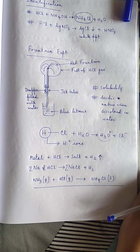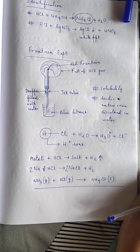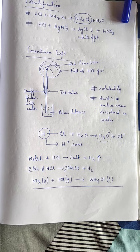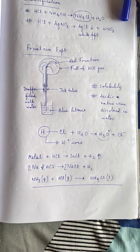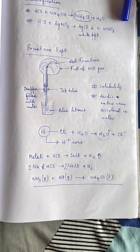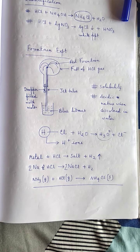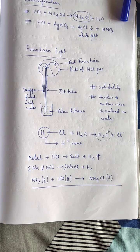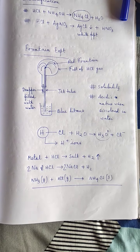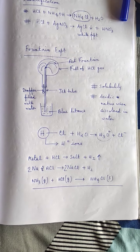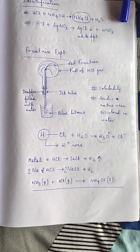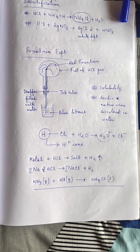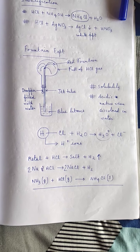That is all about hydrogen chloride gas. In the next class we will continue to read about hydrochloric acid, which we obtain by dissolving hydrogen chloride gas in water. We will read about the preparation of hydrochloric acid and its chemical reactions. Based on this class I will give you some questions as homework that you can solve at home.